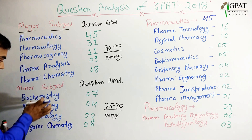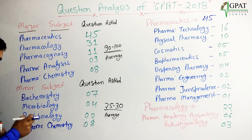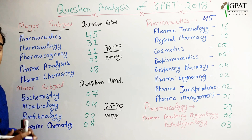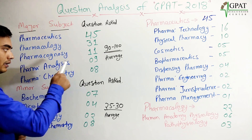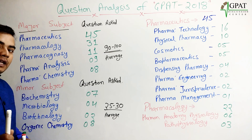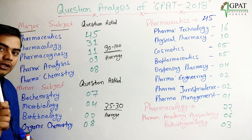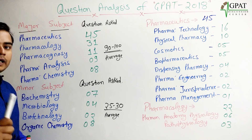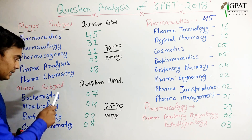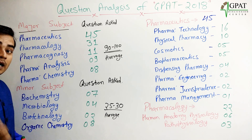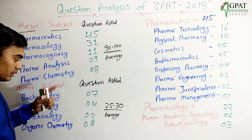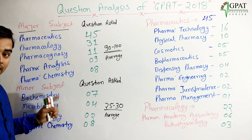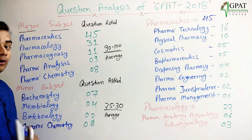From the minor subjects — biochemistry, microbiology, biotechnology, and organic chemistry — these are your minor subjects, but they are important. Major subjects always qualify you for the result, but these minor subjects are important to boost your rank. So all these minor subjects are also very important.